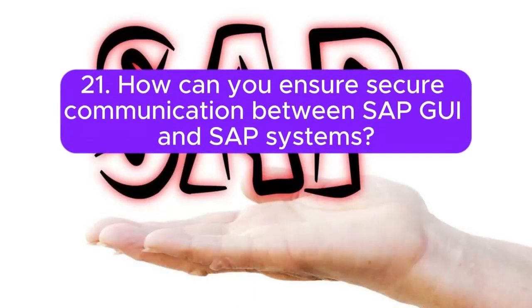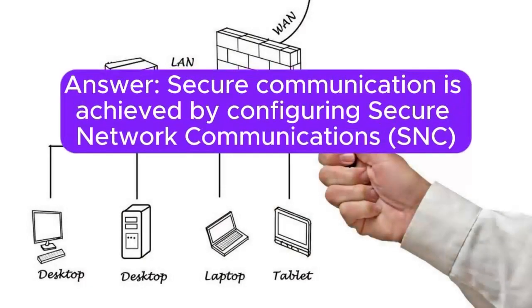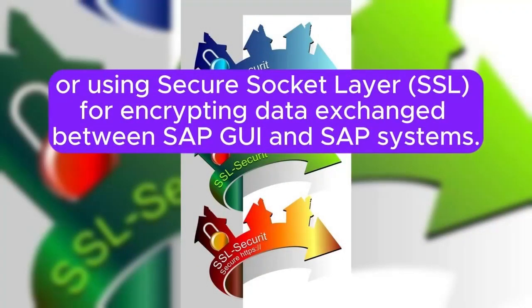Question 21: How can you ensure secure communication between SAP GUI and SAP systems? Answer: Secure communication is achieved by configuring Secure Network Communications (SNC) or using Secure Sockets Layer (SSL) for encrypting data exchanged between SAP GUI and SAP systems.